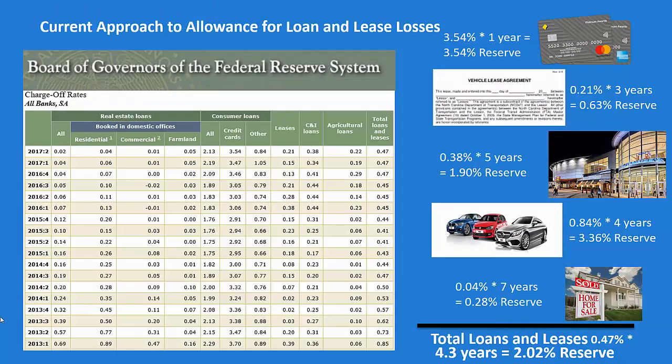The current approach to allowance for loan and lease losses essentially would look at each loan type, lease type, look at the historical charge-off rate, and then to provide a reserve, they would just simply say how long is that loan or that portfolio going to be on the books, and they would just take the charge-off rate times the life of that portfolio, the average life of the portfolio, to come up with a reserve.